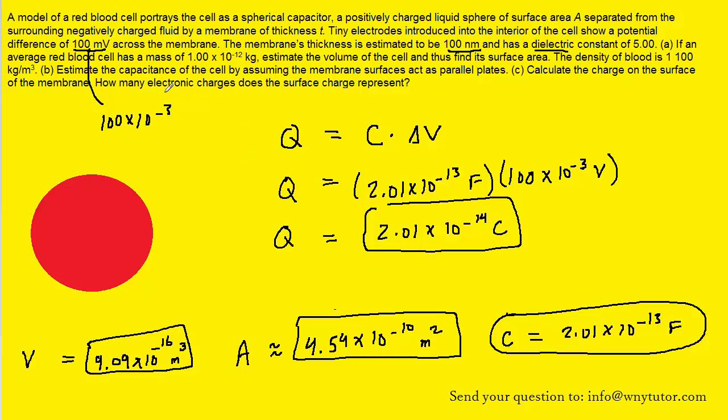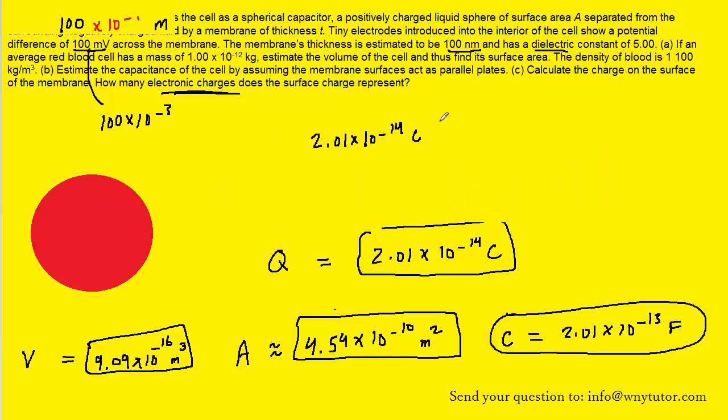We could then convert this into the number of electronic charges as follows. We take the total amount of charge and then we multiply it by a conversion factor. One electronic charge has an amount of charge equal to 1.6 times 10 to the minus 19th coulombs. If we set our conversion factor up in this manner, we would see that the coulombs here in the numerator would cancel with the coulombs in the denominator. So we'll go ahead and multiply this quantity out. And we get a total number of charges equal to 1.26 times 10 to the power of 5. And the unit here would just be E, which represents electronic charges. And so this would be the correct answer to the question.